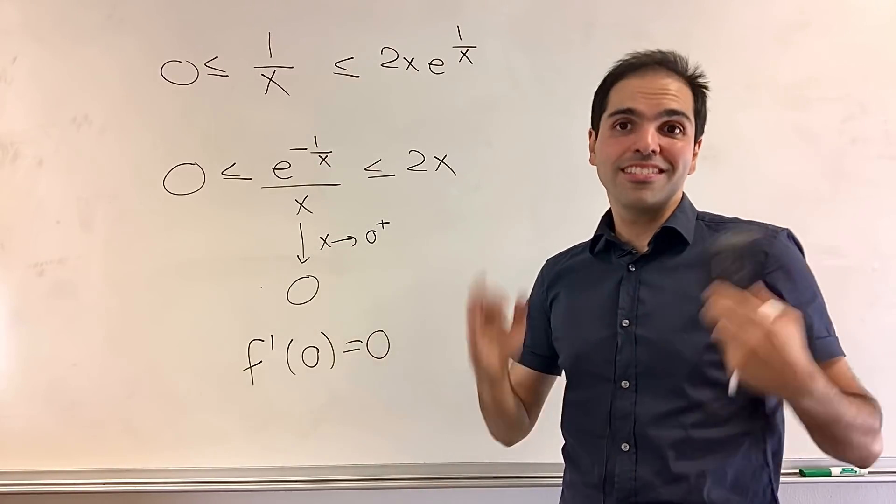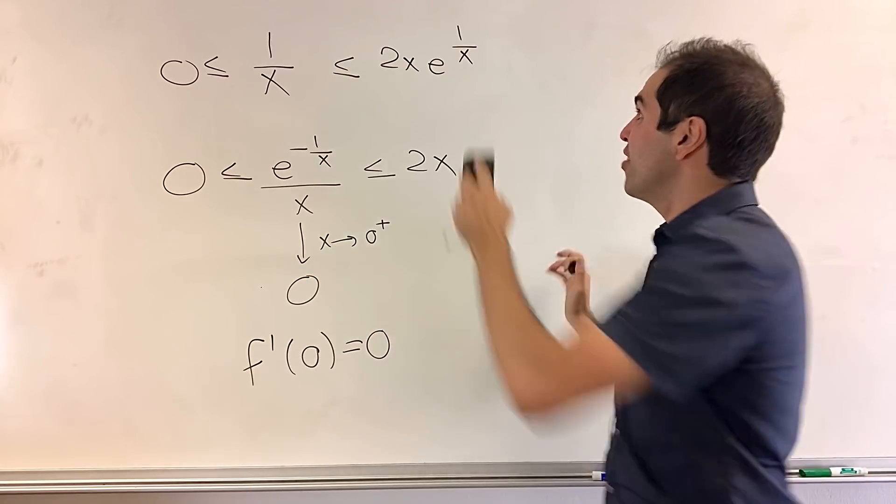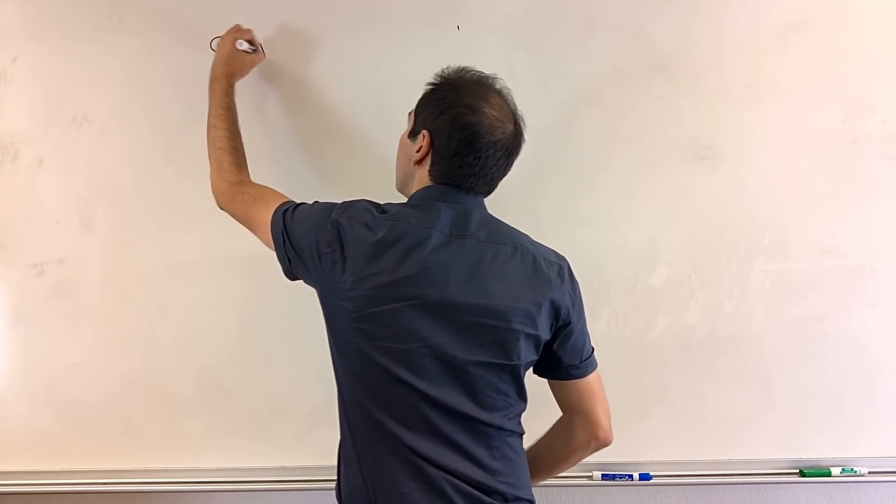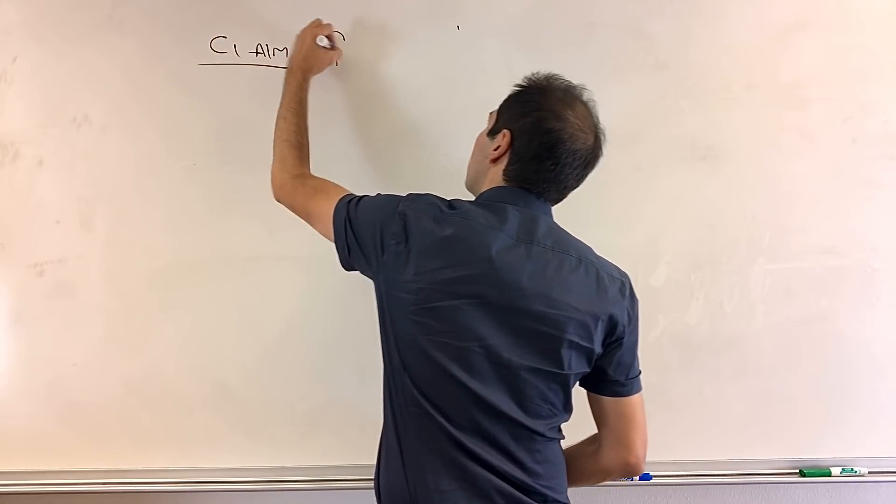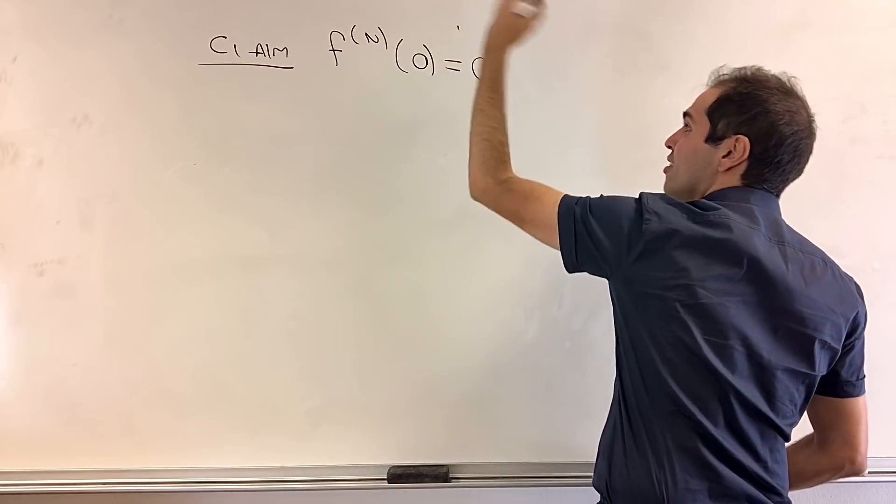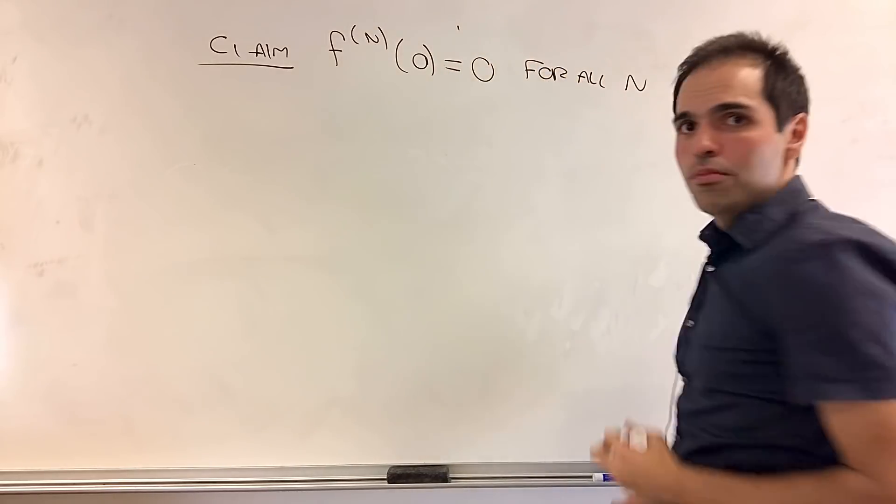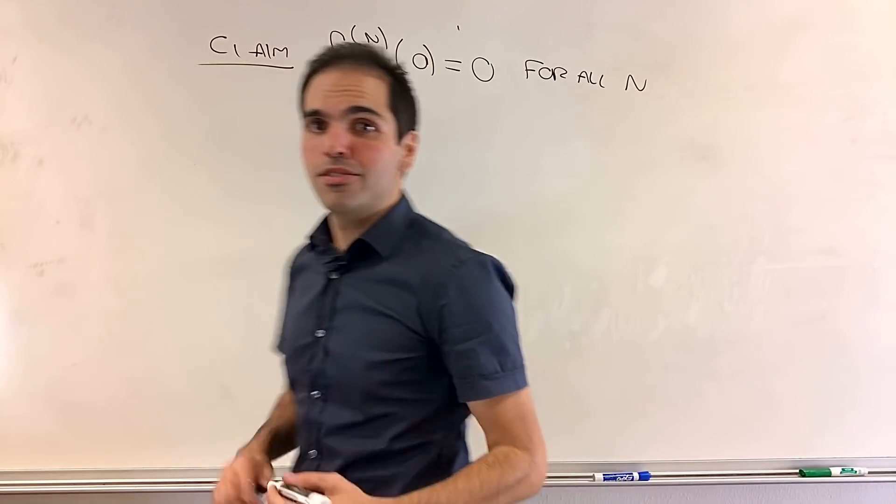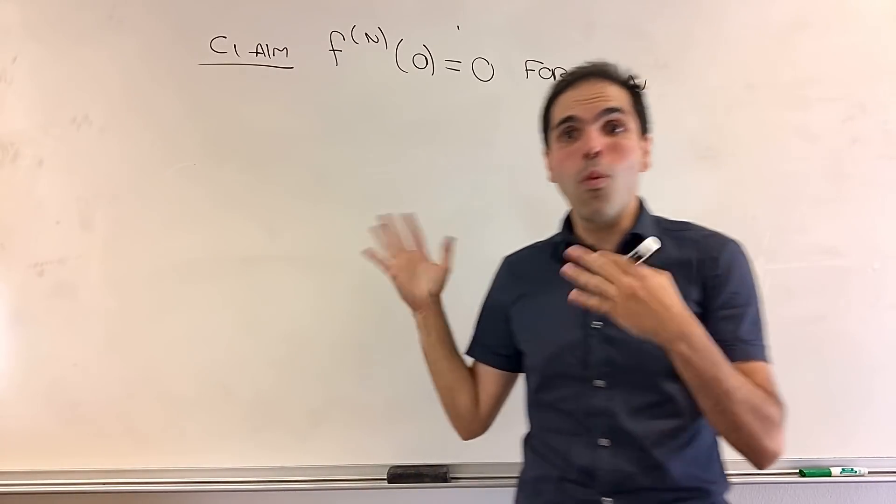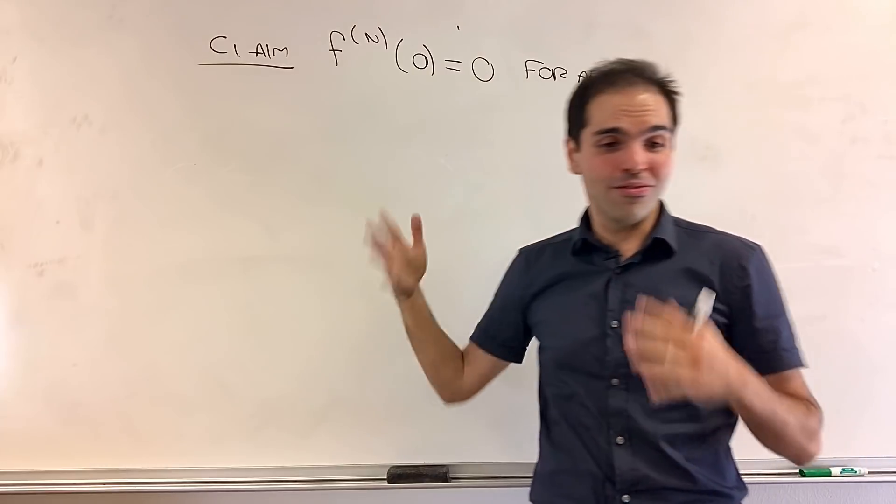And the cool thing is, which I'll show in a second, is that the same thing is true for all the derivatives of f at zero. So claim the nth derivative of f equals zero for all n. But before I show this, let me just remark, so why is that so cool?